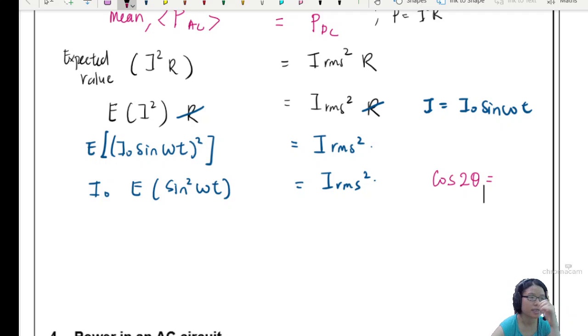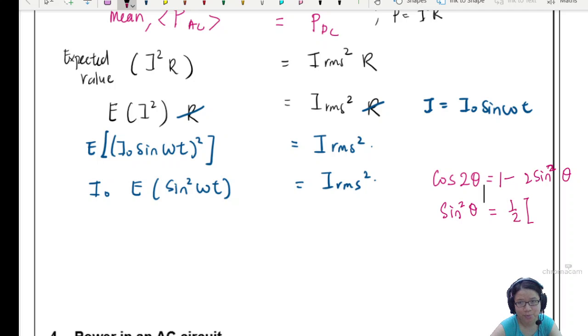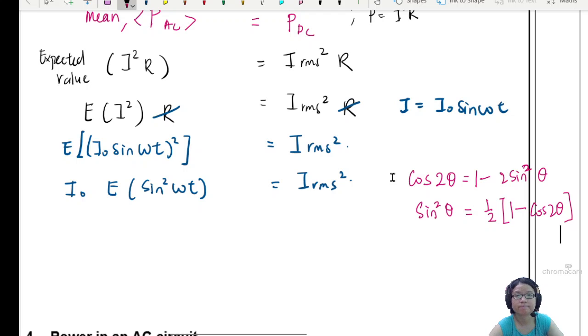So we will use the identity cos 2 theta is equal to 1 minus 2 sine squared theta. I'm substituting sine squared. So sine squared theta will be equal to half bracket 1 minus cos 2 theta. I will substitute this into the equation. Sine squared theta is equal to half 1 minus cos 2 theta. I will substitute this inside sine squared theta. So what I'll get now is, you can see I have already highlighted what I wanted to substitute. So the equation now will look like I naught squared